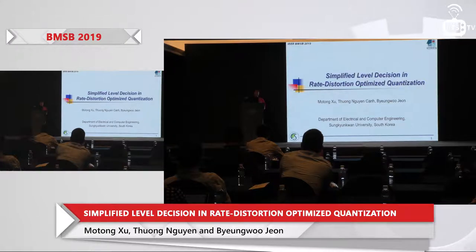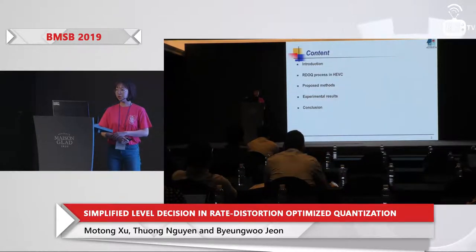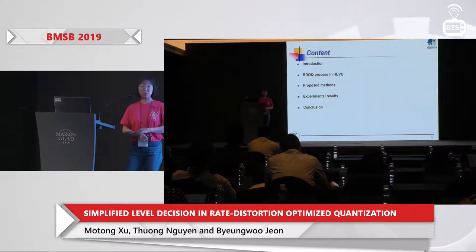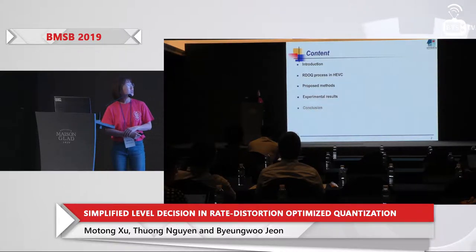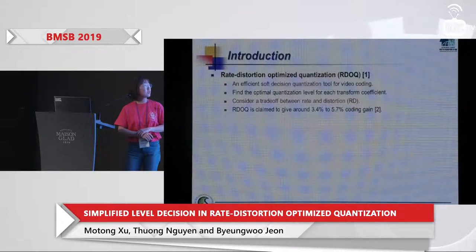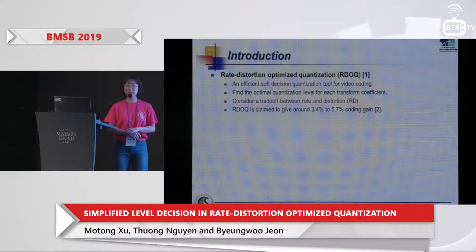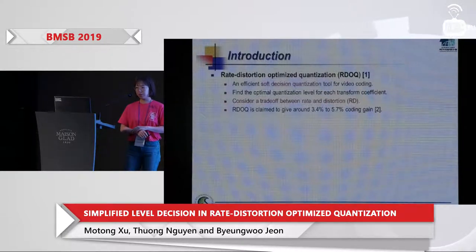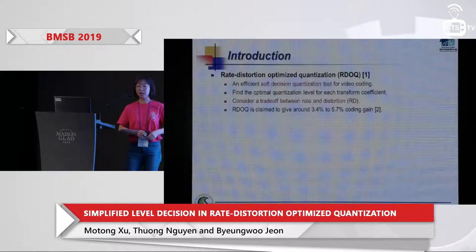Today the paper I would like to present is 'Simplified Level Decision in Rate-Distortion Optimized Quantization.' Rate-Distortion Optimized Quantization, also called RDOQ, is a very efficient soft decision quantization tool for video coding. It tries to find the optimal quantization level for each transform coefficient based on a trade-off between rate and distortion.